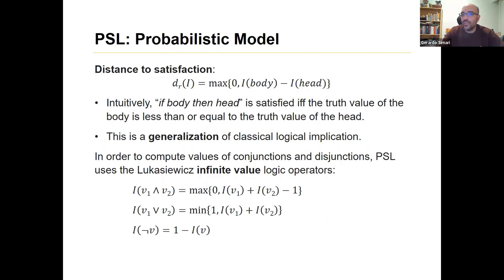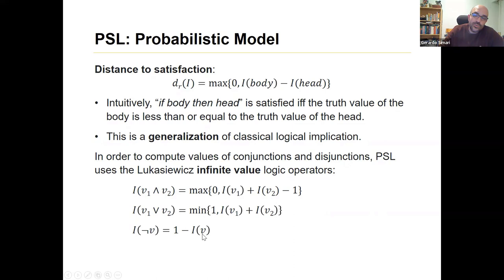To combine different values of conjunctions and disjunctions, PSL uses an infinite-valued logic called Lukasiewicz operators. These are simply: AND is the max between 0 and the sum minus 1; OR is the minimum between 1 and the sum; and negation is just 1 minus the value. You can apply this recursively with however many operands you want.